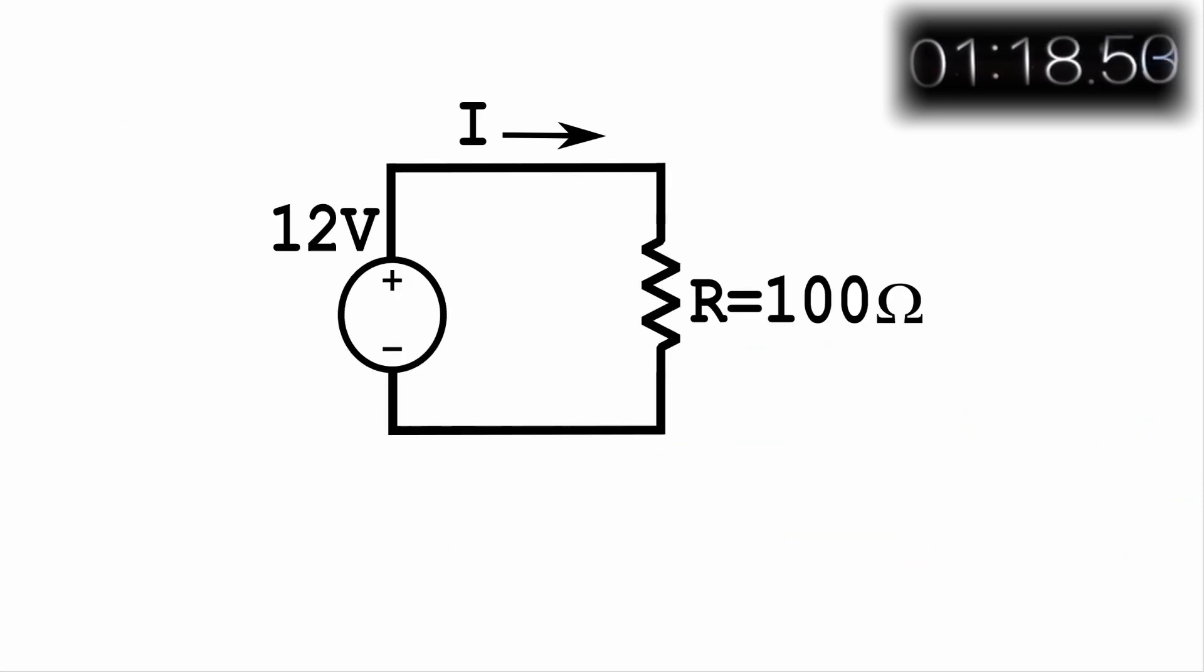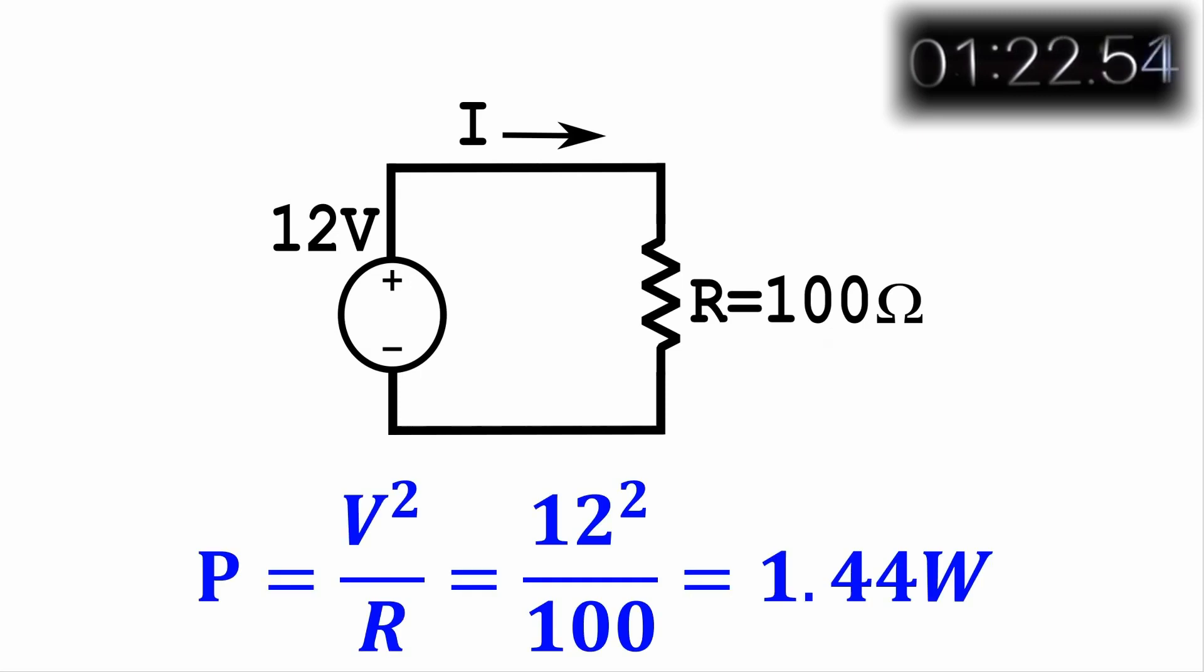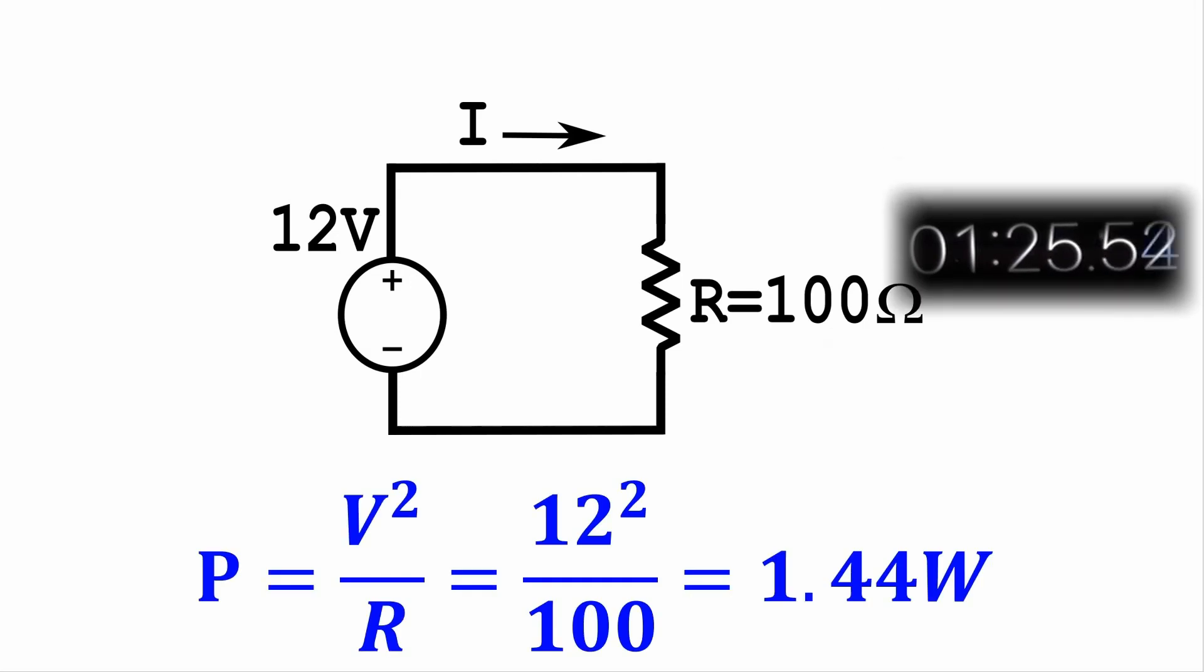And another example, if you have 12 volts across a 100 ohm resistor, you get 12 squared over 100 equals 1.44 watts of power dissipated by that resistor.